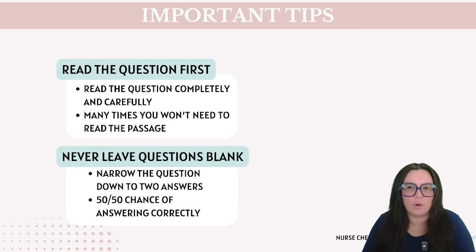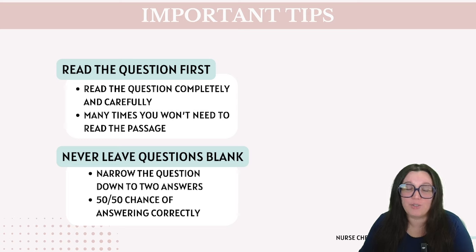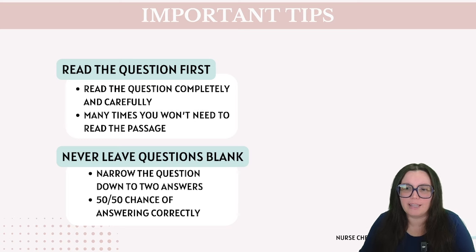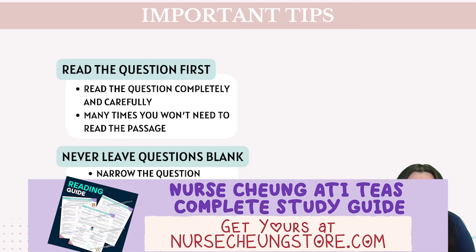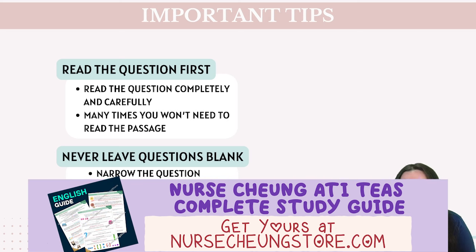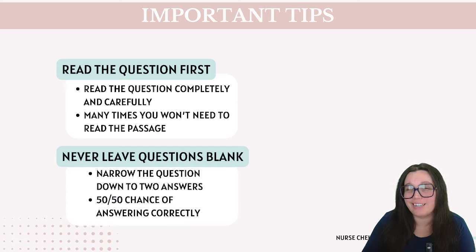Tip number two: don't leave questions blank. The TEAS is timed, so manage that time effectively. Answer each question when you first encounter it because you might not have time to go back. Strategic guessing is also really good — if you're uncertain about an answer, make an educated guess initially rather than leaving it blank. And use the elimination method to narrow down your choices, giving you a 50/50 chance of getting it right.